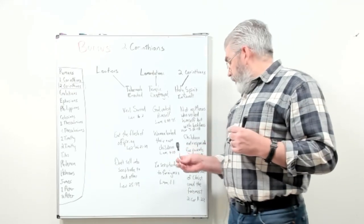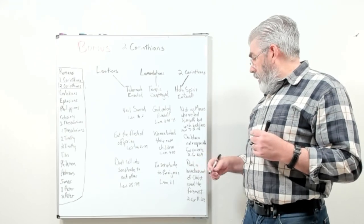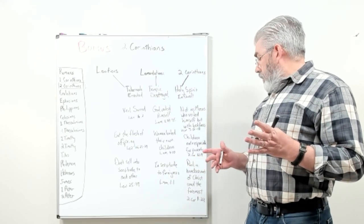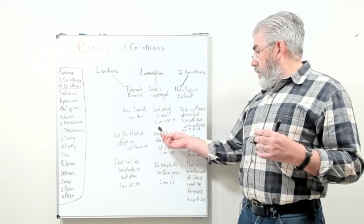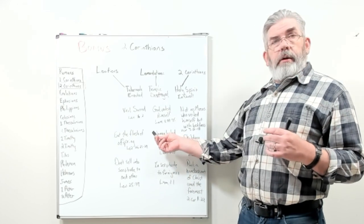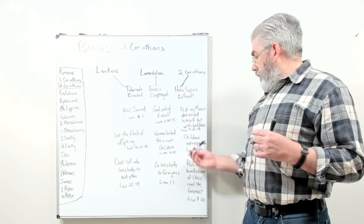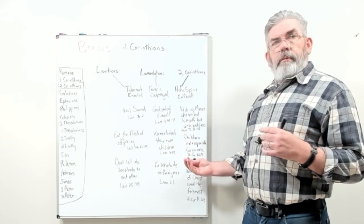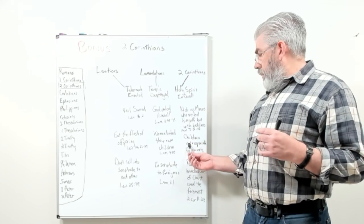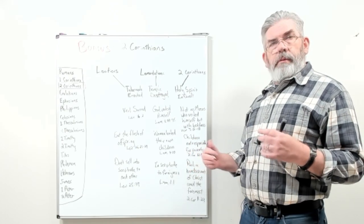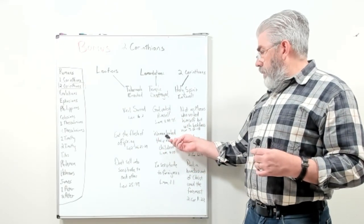There's a correspondence here in 2 Corinthians 12:14 as well — Paul says, 'Children are not responsible for the parents, but the parents for the children.' So he's basically saying these people had it backwards: they were feeding on their own children to keep themselves going. Paul is saying, no, that's completely backwards — the parents should be responsible to take care of the children.